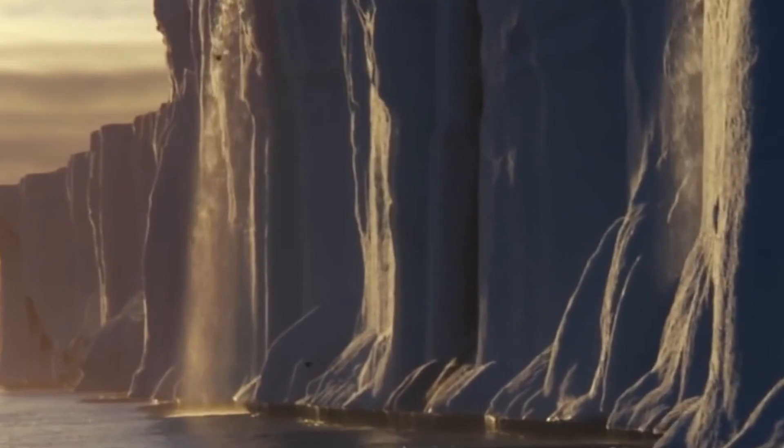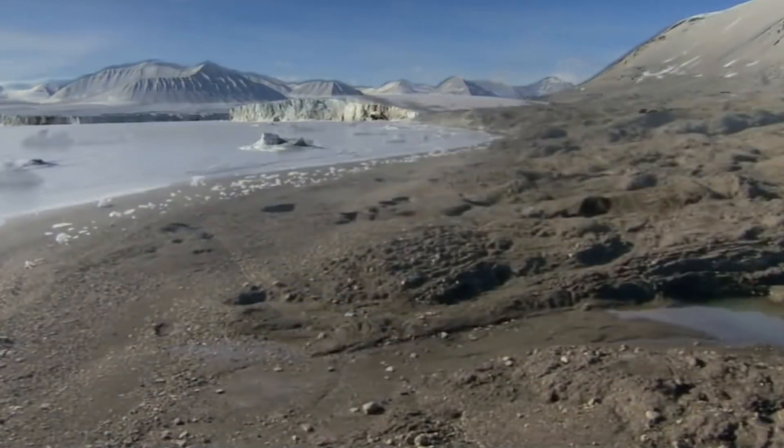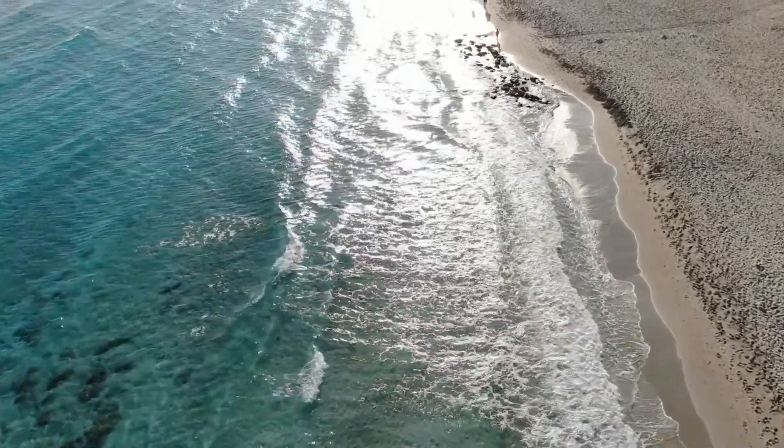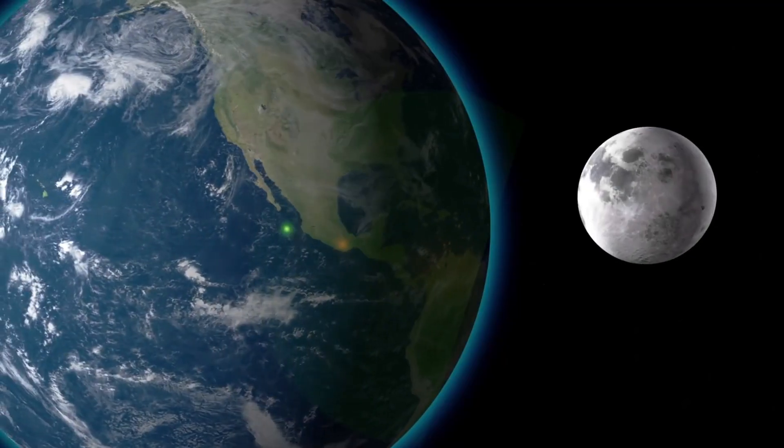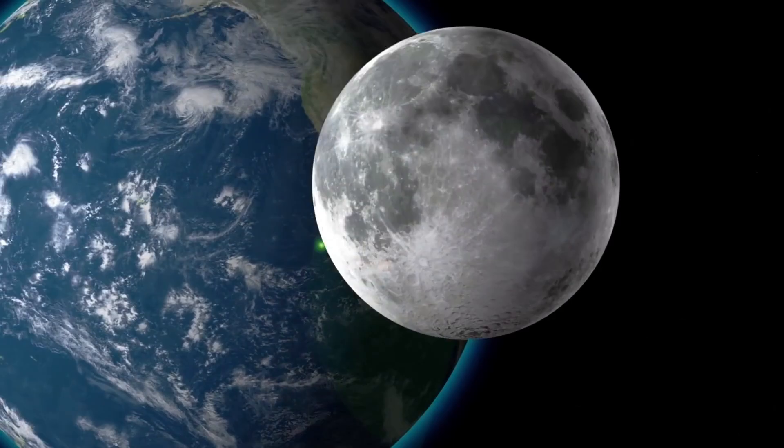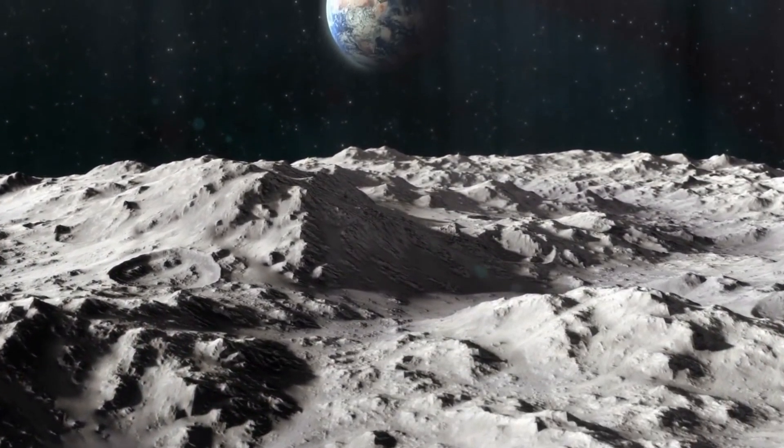As the dust settles, our oceans begin to feel the absence. Without the Moon's gravitational pull, the tides start to falter. The once predictable ebb and flow that marine species relied on for survival grows erratic.